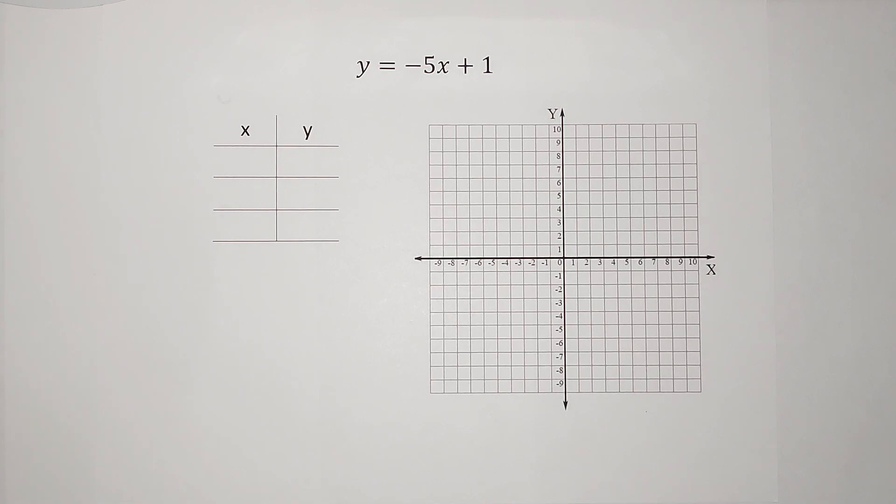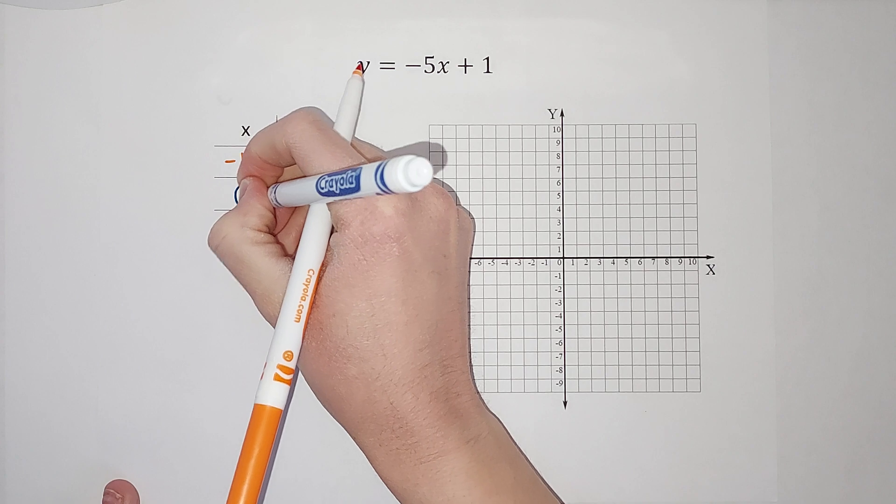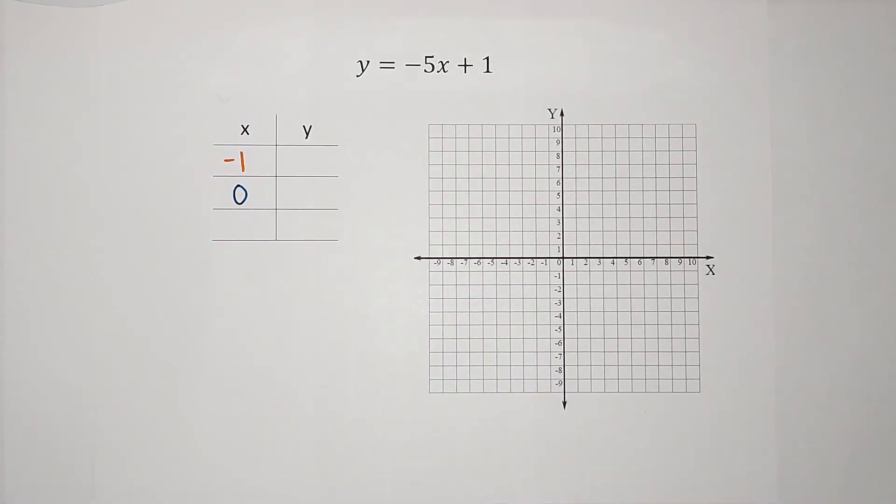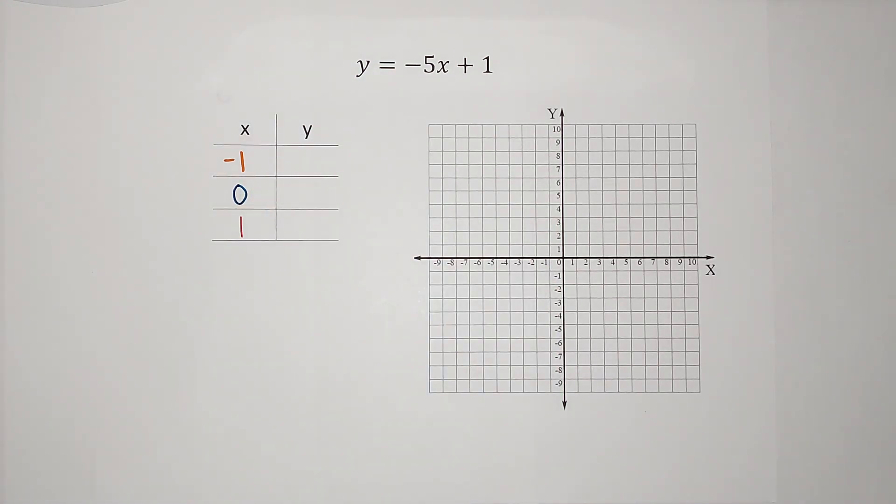So a lot of times we pick negative one, zero, and you probably guessed it one. Now you don't have to plug in these numbers, but it's just easier for us. We're trying to be nice to ourselves.